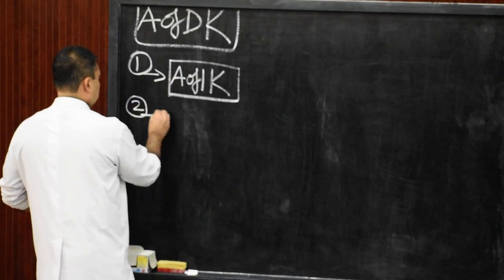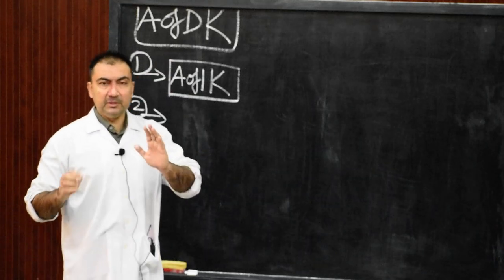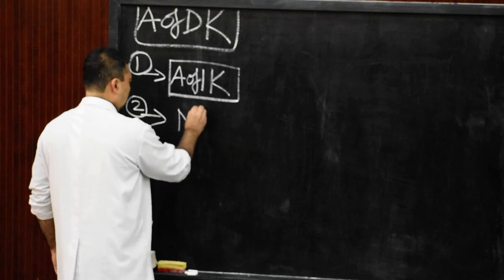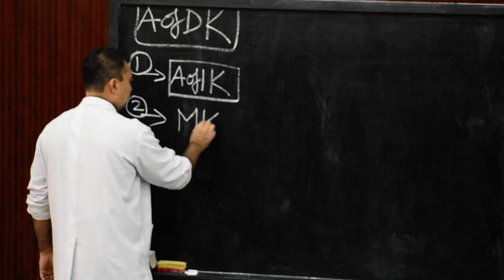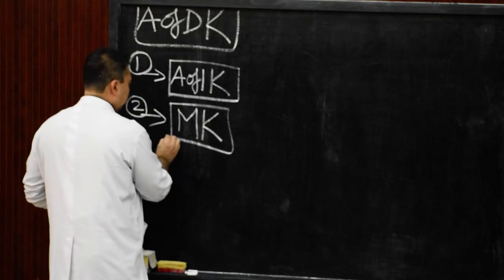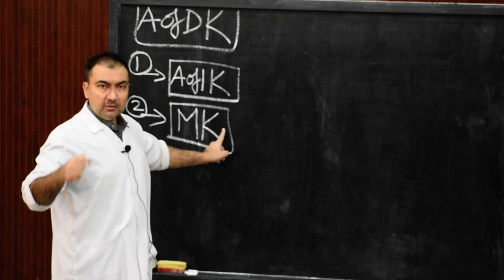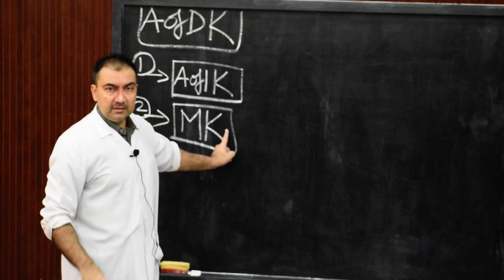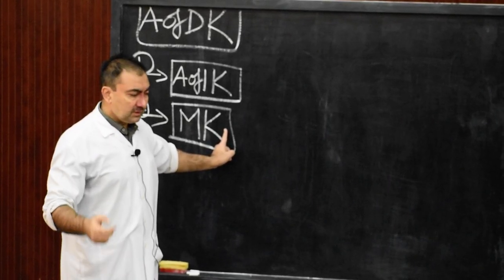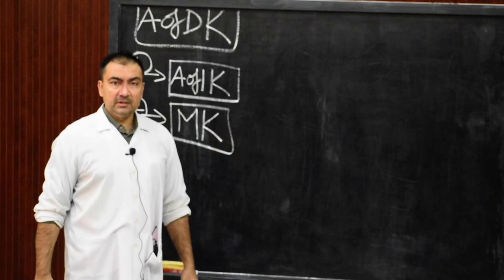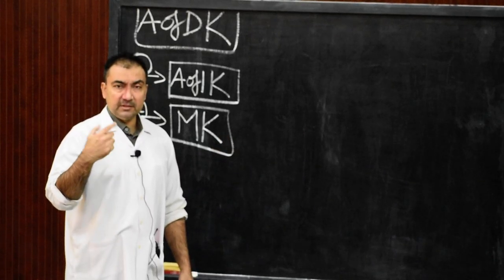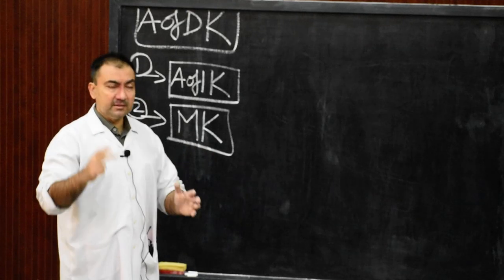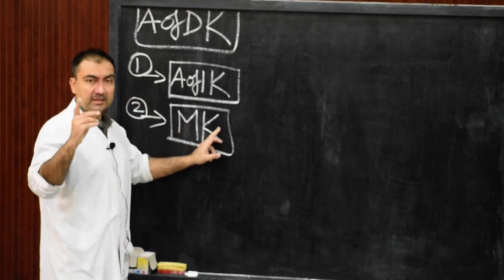The second anomaly will be multiple kidneys. On one side there may be development of more than one kidney. So on one side, because of the early splitting of the mesonephric duct or ureteric bud, there may be development of more than one kidney on one side. That is called multiple kidneys.